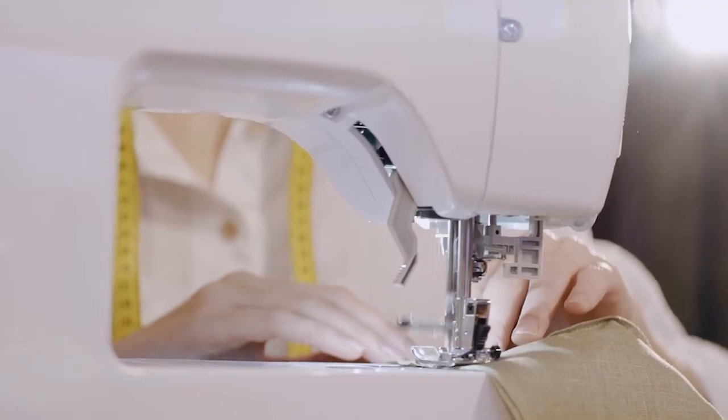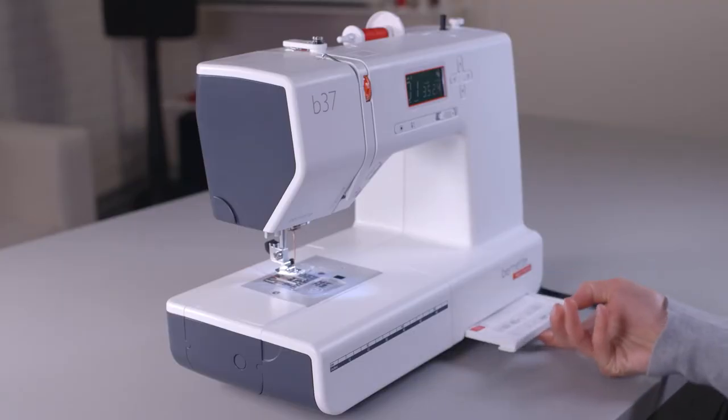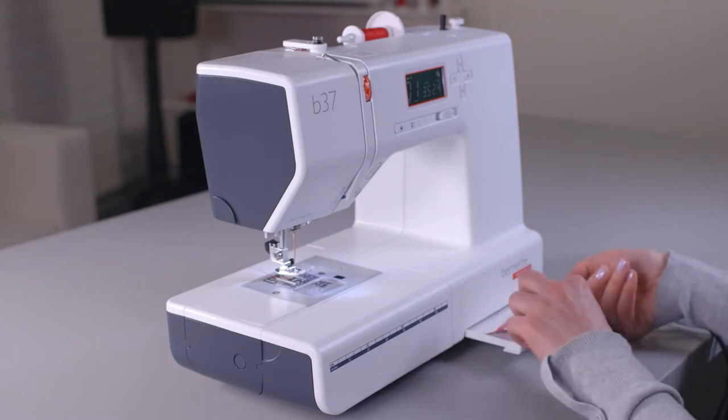The information displayed on the LCD includes the stitch pattern number to show you which of the programmed stitches the machine will use, the stitch width, the stitch length, and the presser foot recommendation.